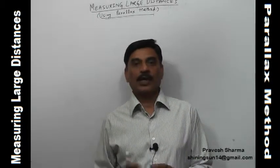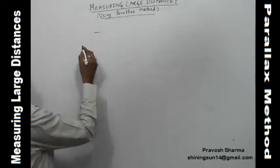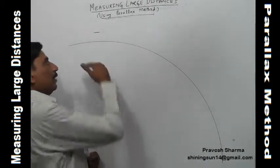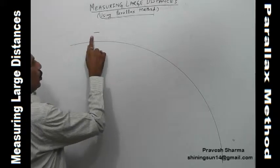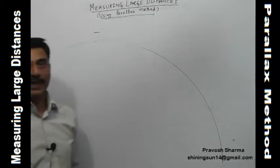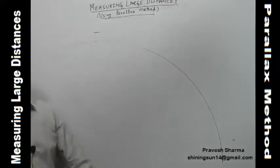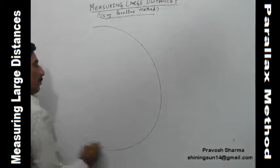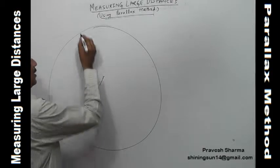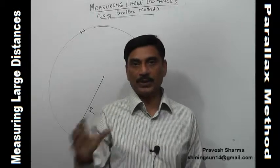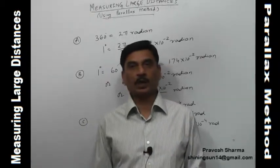Now, if I draw a curve with very large radius of curvature, but small curvature, then a small portion of it looks like a straight line. So if the radius of curvature is huge, small distances are almost equal to straight lines. We will use this concept when finding the diameter of Earth or the Sun using the parallax method.